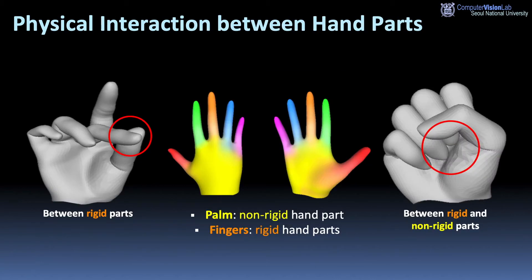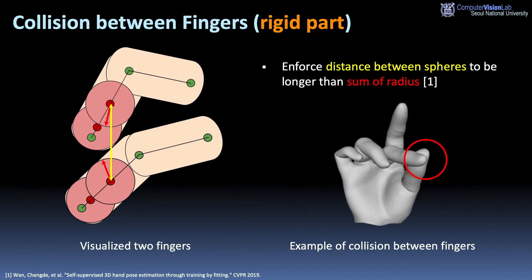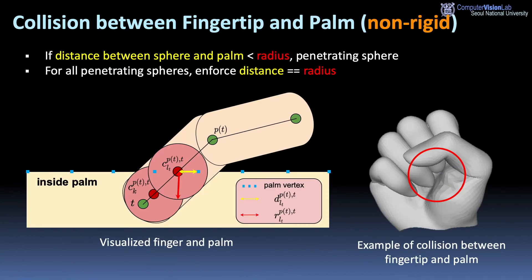We divide physical interaction between hand parts into two cases: first, between rigid parts, and second, between rigid and non-rigid parts. We generate spheres inside the fingers. To avoid collision between fingers, we enforce the distance between spheres to be longer than the sum of their radii. To avoid collision between fingertip and palm, we calculate the distance between the sphere and the palm. If the distance is shorter than the radius, it is considered a penetrating sphere. For all penetrating spheres, we enforce the distance to equal the radius.